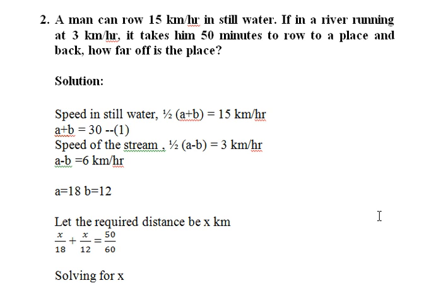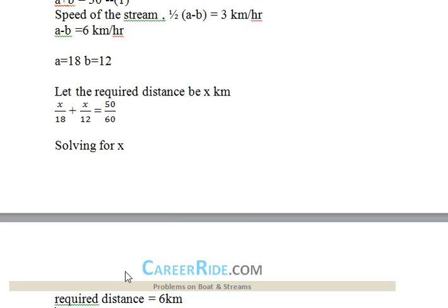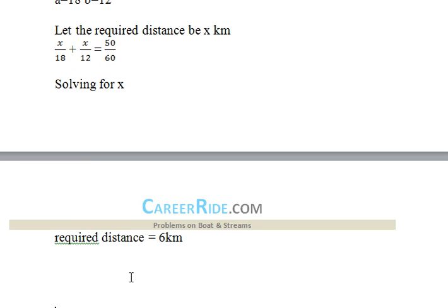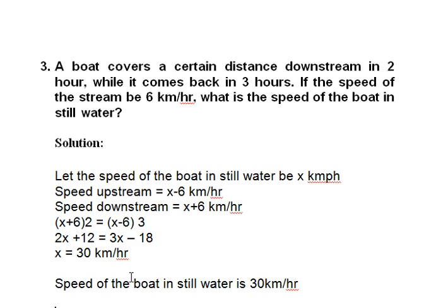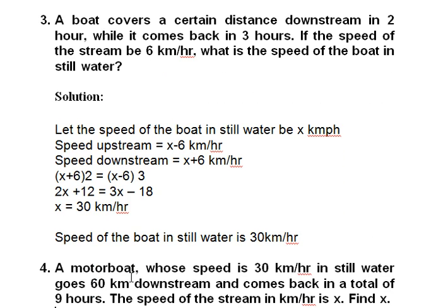Solving the two equations gives a = 18 and b = 12, where a is the speed upstream and b is the speed downstream. The total journey time is 50 minutes, converted to hours as 50/60. So x/18 is the time taken upstream and x/12 is the time taken downstream. Setting x/18 + x/12 = 50/60 and solving gives x = 6 kilometers.